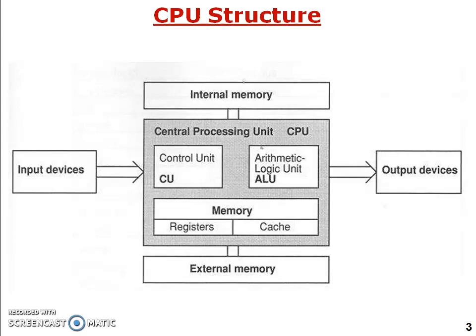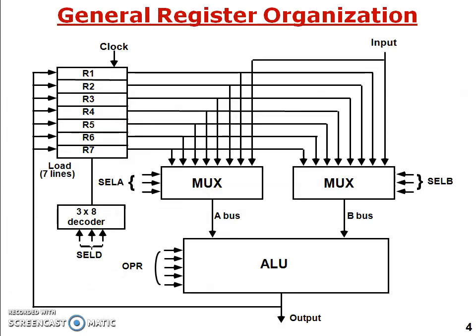External memory is attached to the central processing unit, and input and output devices are also attached. A simple block diagram of the ALU section is given, showing how registers are configured to each section. Internal electronic devices work together; the decoder generates a signal to select two registers having the data to perform an arithmetic operation.